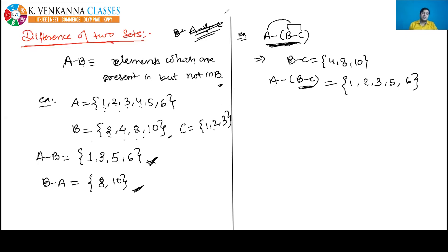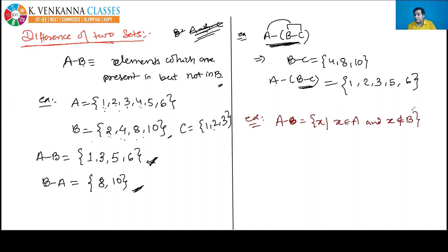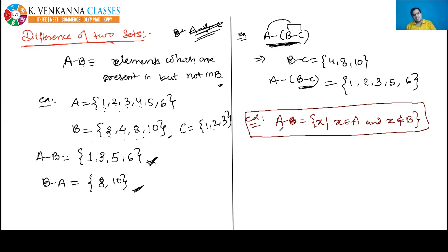The formal definition: A - B = {x : x ∈ A and x ∉ B}. I will not teach symmetric difference here as it is not asked in IIT; it will be covered in Math A board exam.